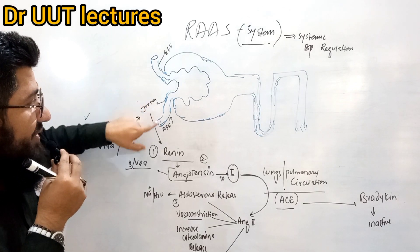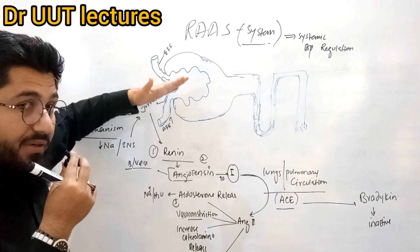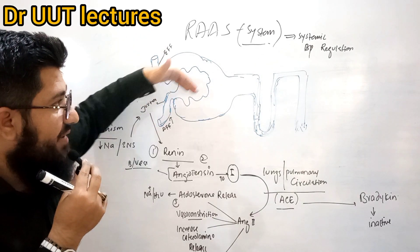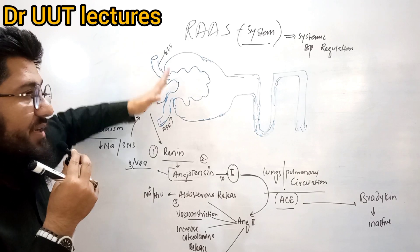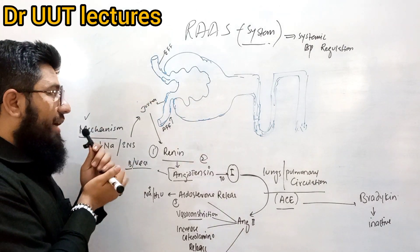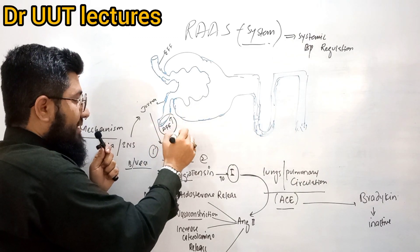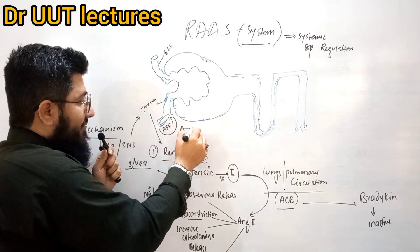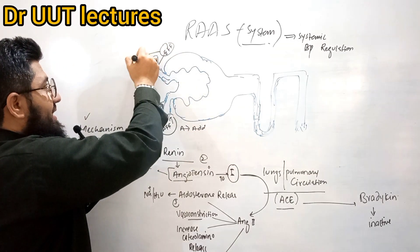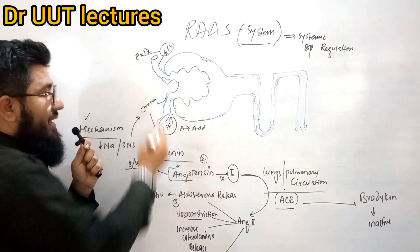Afferent arterioles bring blood to the Bowman's capsule, and efferent arterioles take the blood from the capsule. A handy mnemonic: A for 'add' — afferent is adding blood in; E for 'exit' — efferent is the exit of blood.